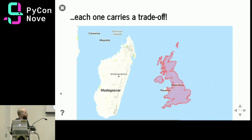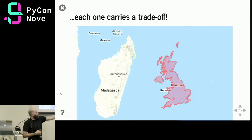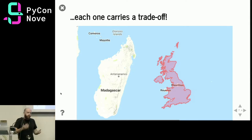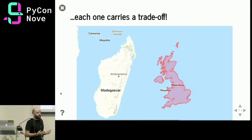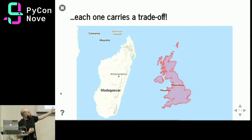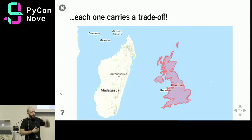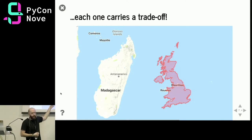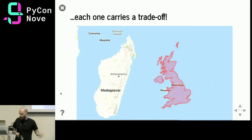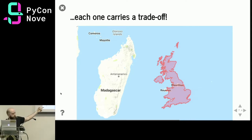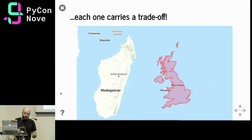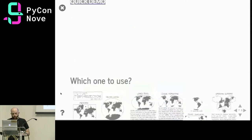Every projection carries a trade-off — you cannot preserve all these properties at the same time. Web Mercator, the projection used by Google Maps, is a conformal projection, so it preserves angles, but the trade-off is that it distorts areas. If you see the UK at high latitude on a typical Google Maps view, it looks really long and stretched, but if you move it back next to the equator you can see that comparatively speaking the actual sizes of these two countries are quite different. Projections can be highly misleading.